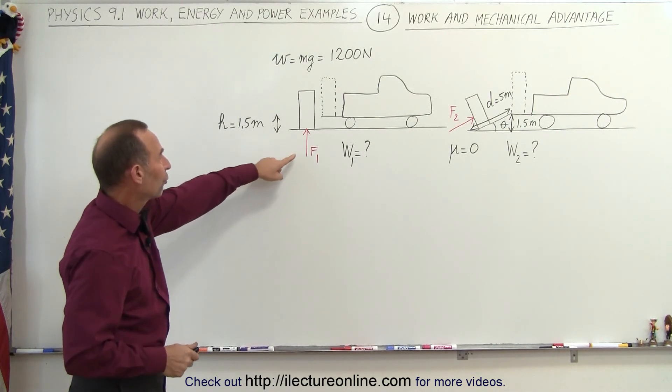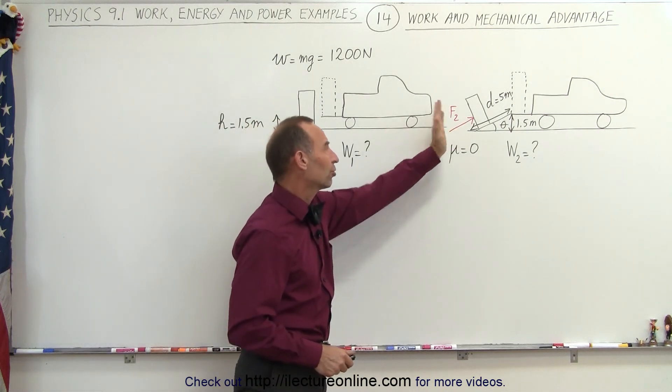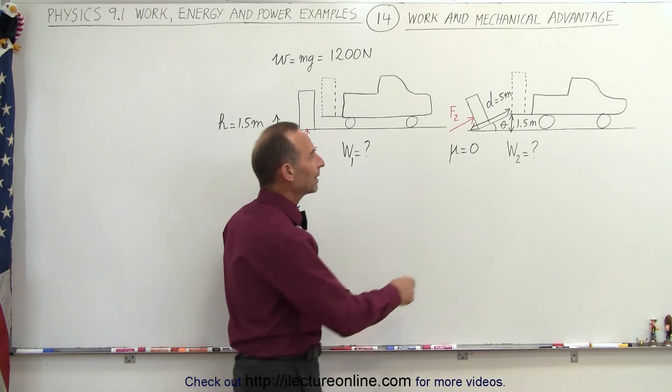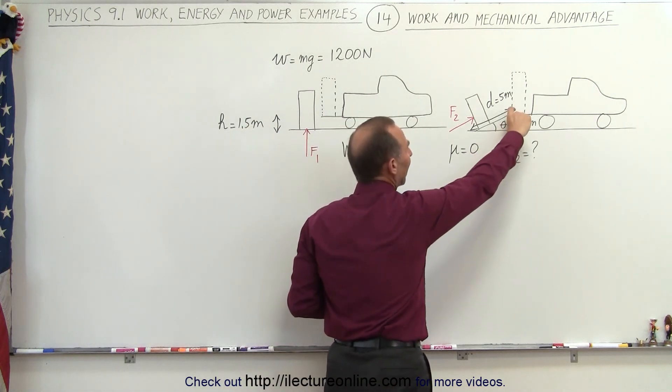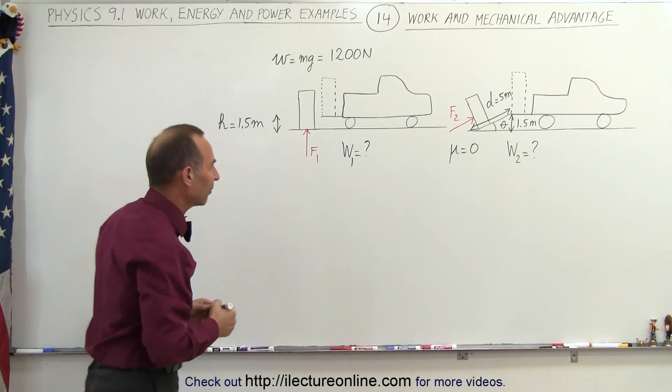So let's first figure out how much force we're going to need to lift the refrigerator and how much force we're going to need to push it up the ramp. Notice we're not given the angle, but we're given that the height is 1.5 meters and that the length of the ramp is 5 meters, so we'll have to figure that out.